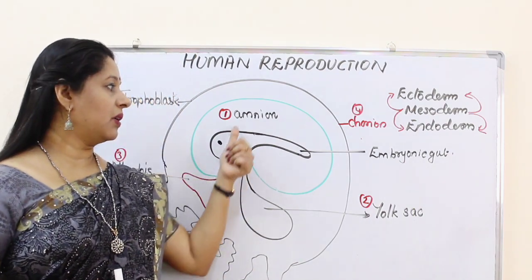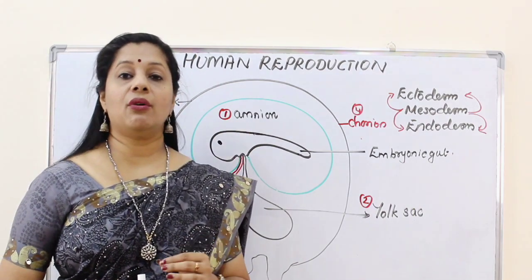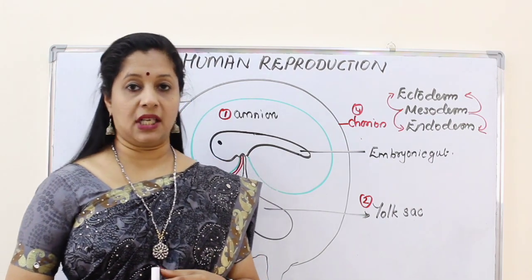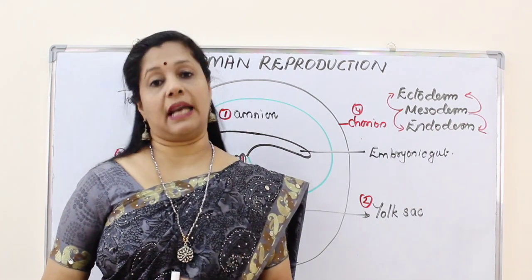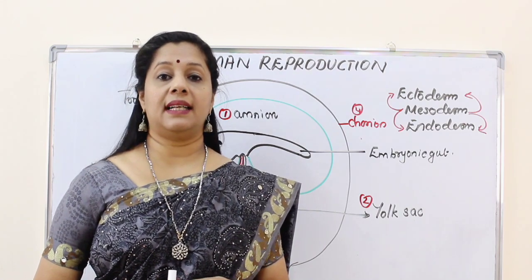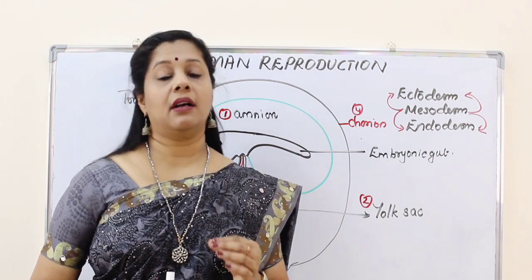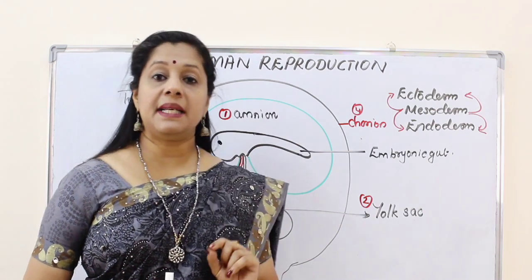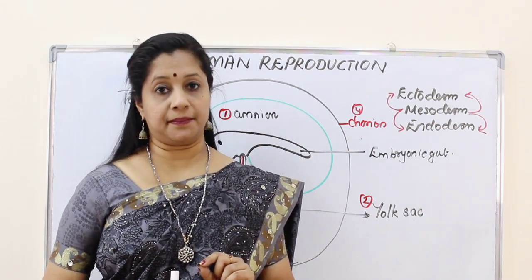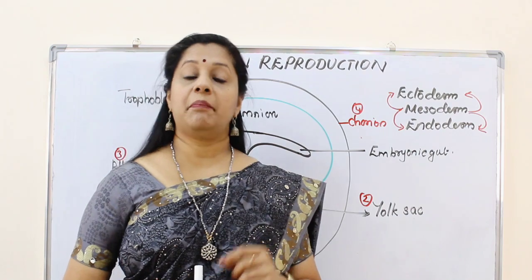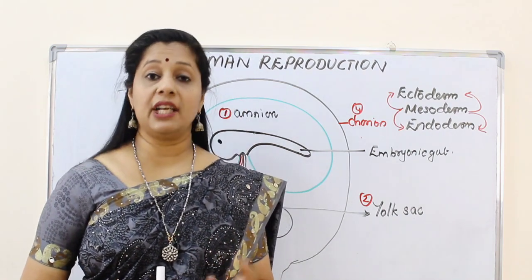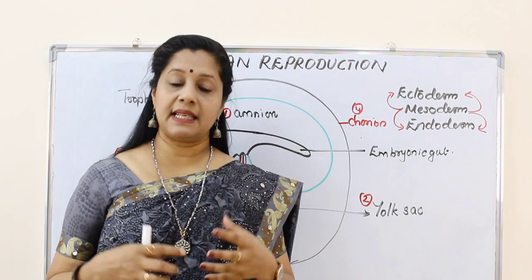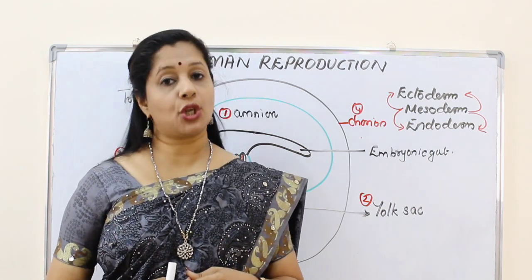The first one we are talking about is amnion. Amnion is a cavity called the amniotic cavity — a fluid-filled cavity. The fluid inside is called amniotic fluid. This layer is formed by mesoderm and ectoderm. The function of this fluid is it prevents desiccation or drying of the embryo during its development, and since it is a fluid, it also acts as a shock absorber.